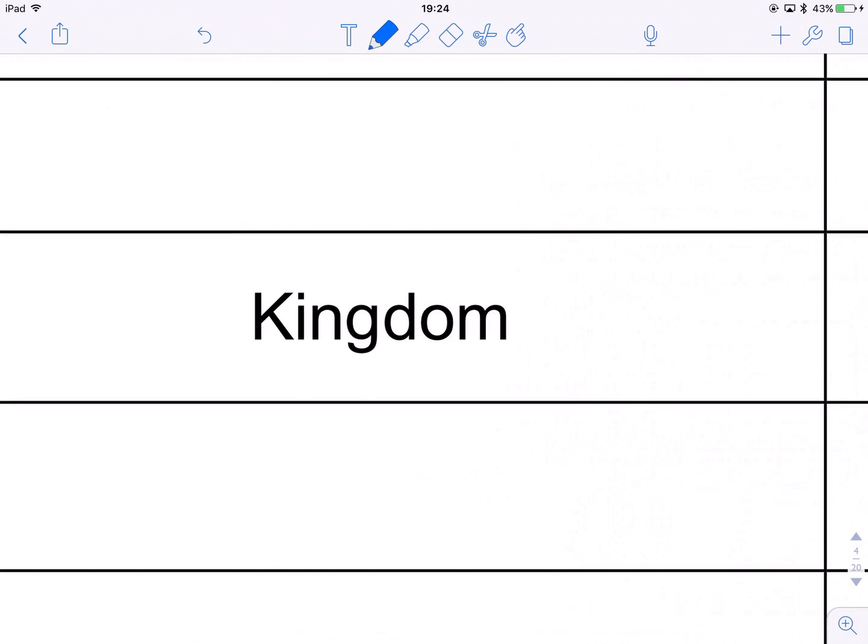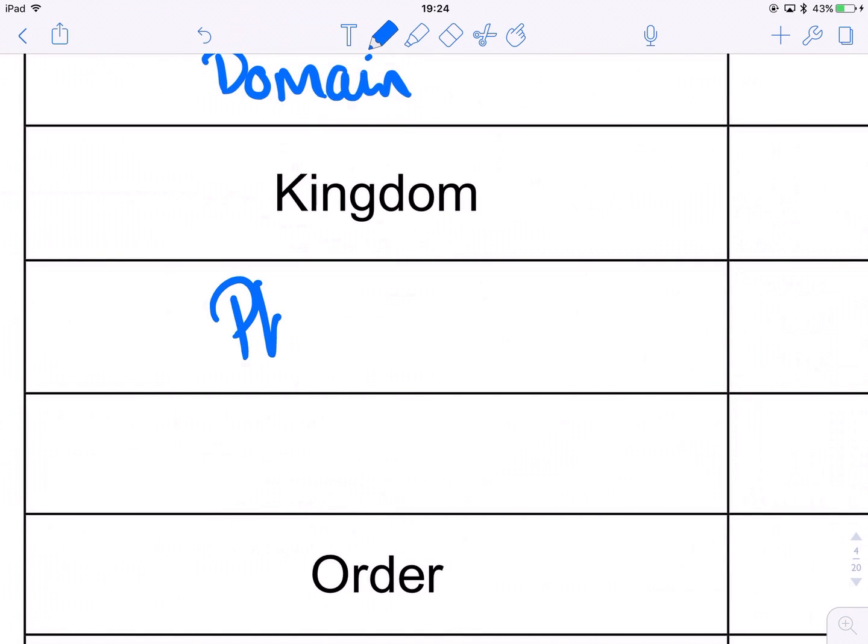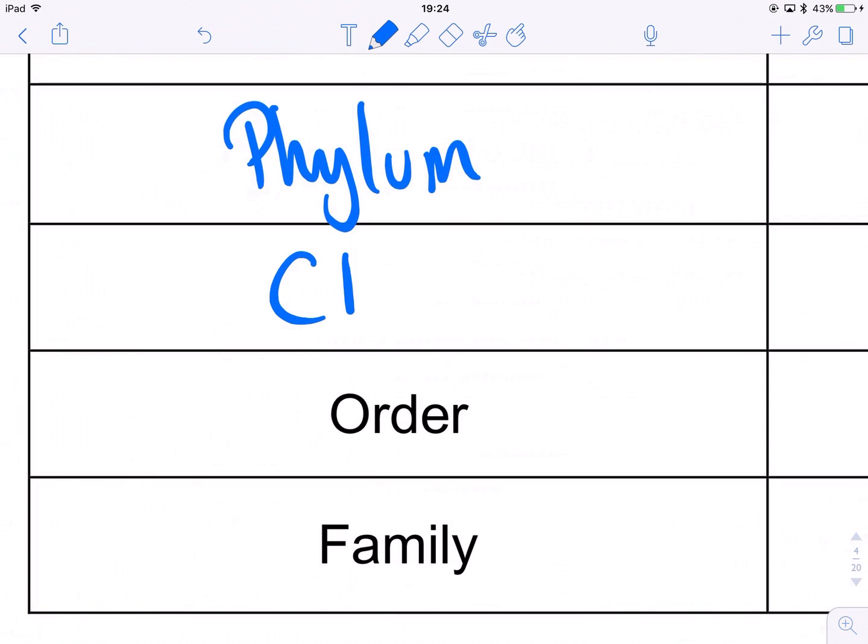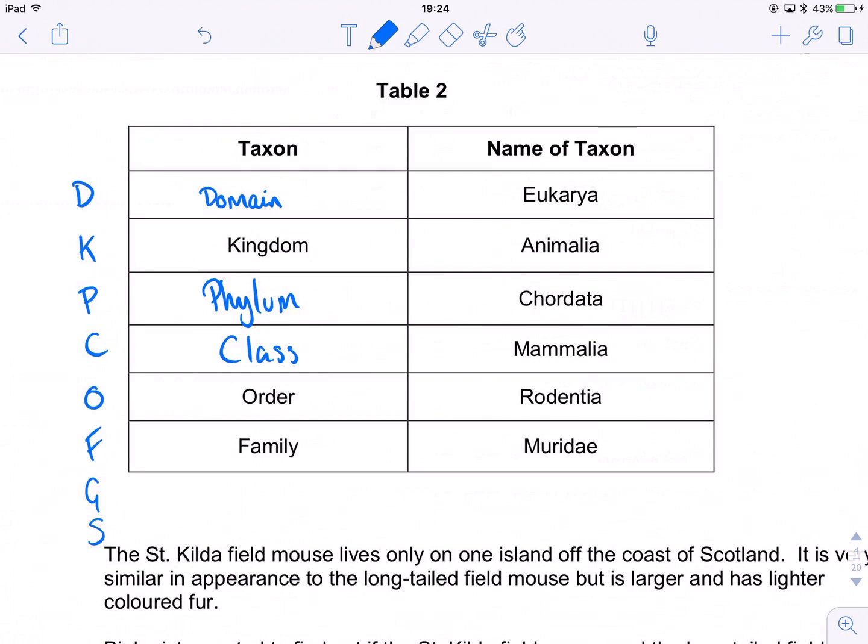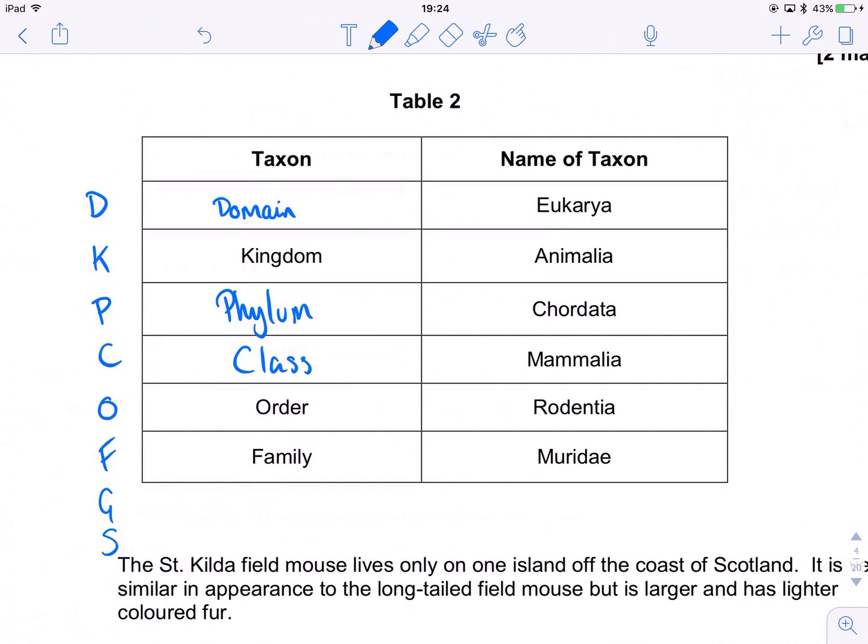So, at the top is our D, that is the domain, which is eukarya, meaning it's a eukaryotic critter. K is kingdom. P is phylum. C is class. Then we've got order, family, genus, species below it. And they're our two marks for completing that beautiful table. So this long-tailed field mouse is from the domain eukarya, the kingdom animalia, the phylum cordata, the class mammalia, the order rodentia, the family muridae, the genus Apodemus, and the species sylvaticus. So did King Philip come over for group sex? Remember it. It works.